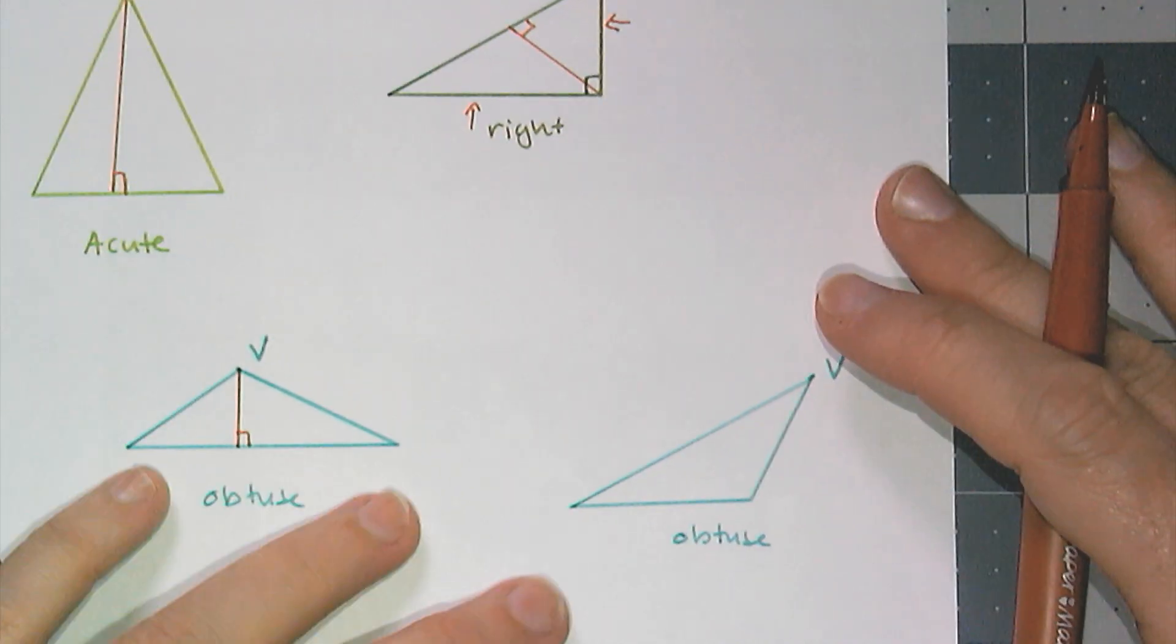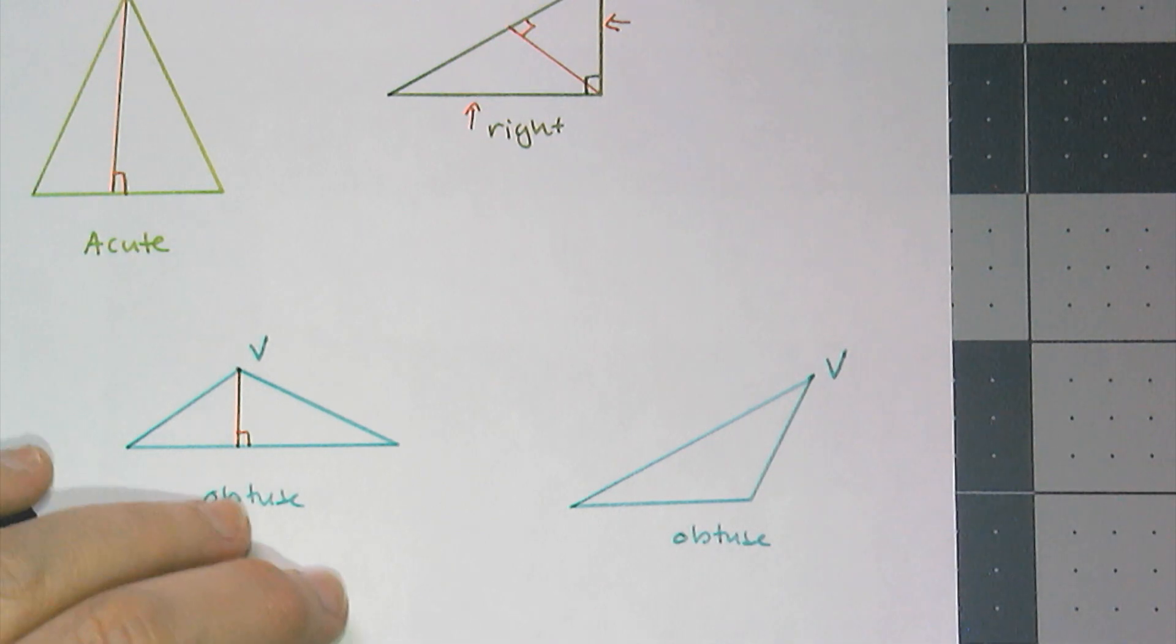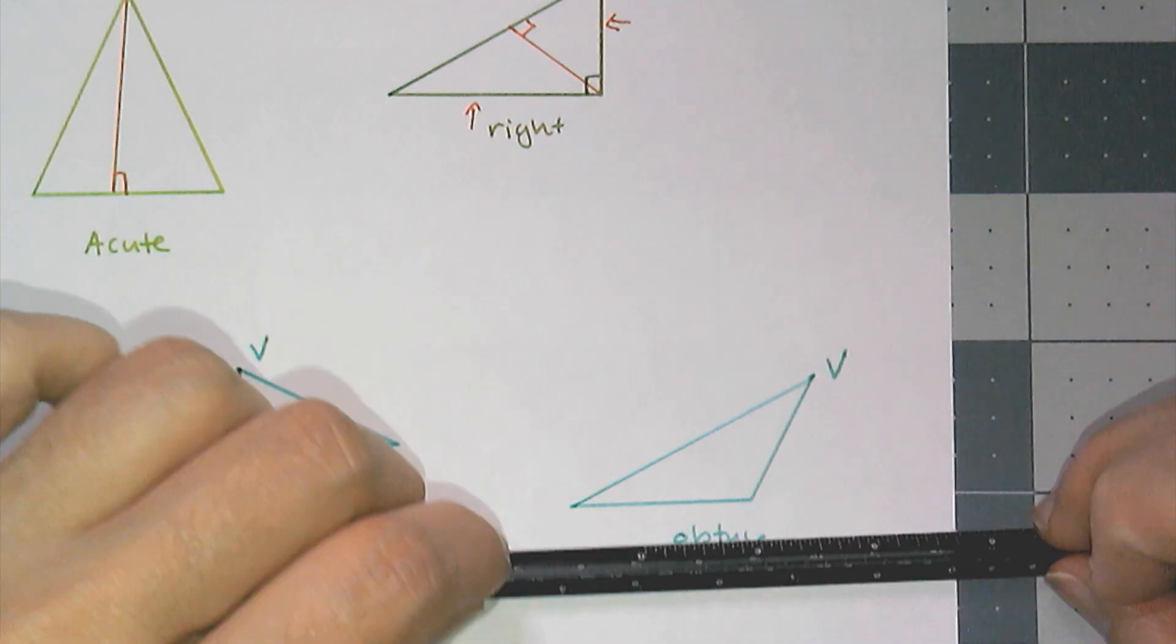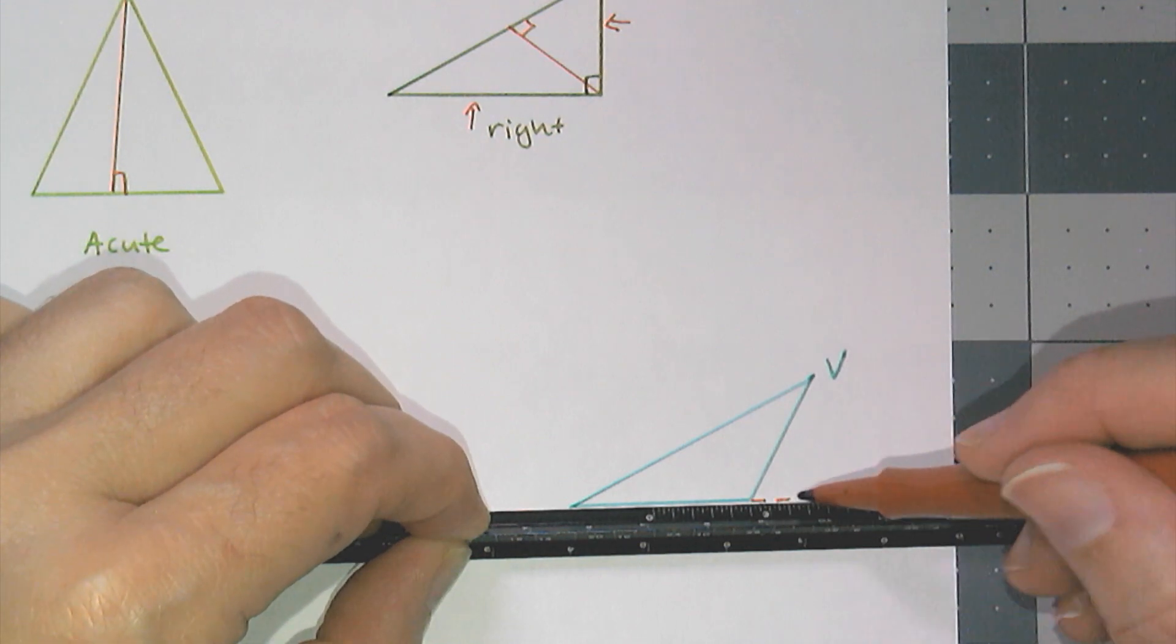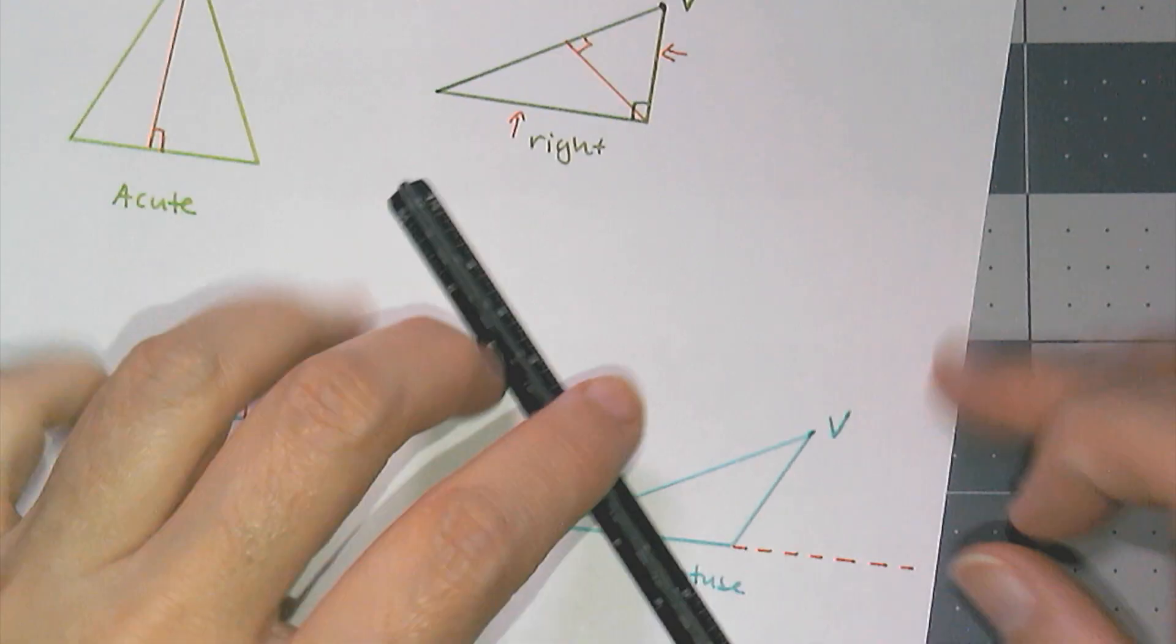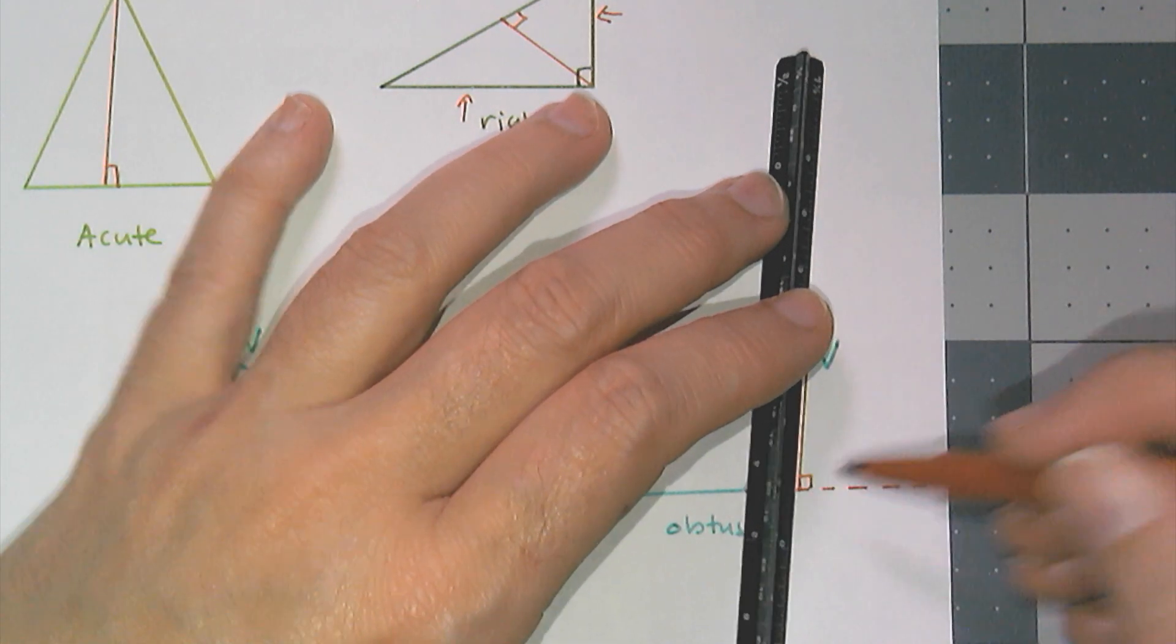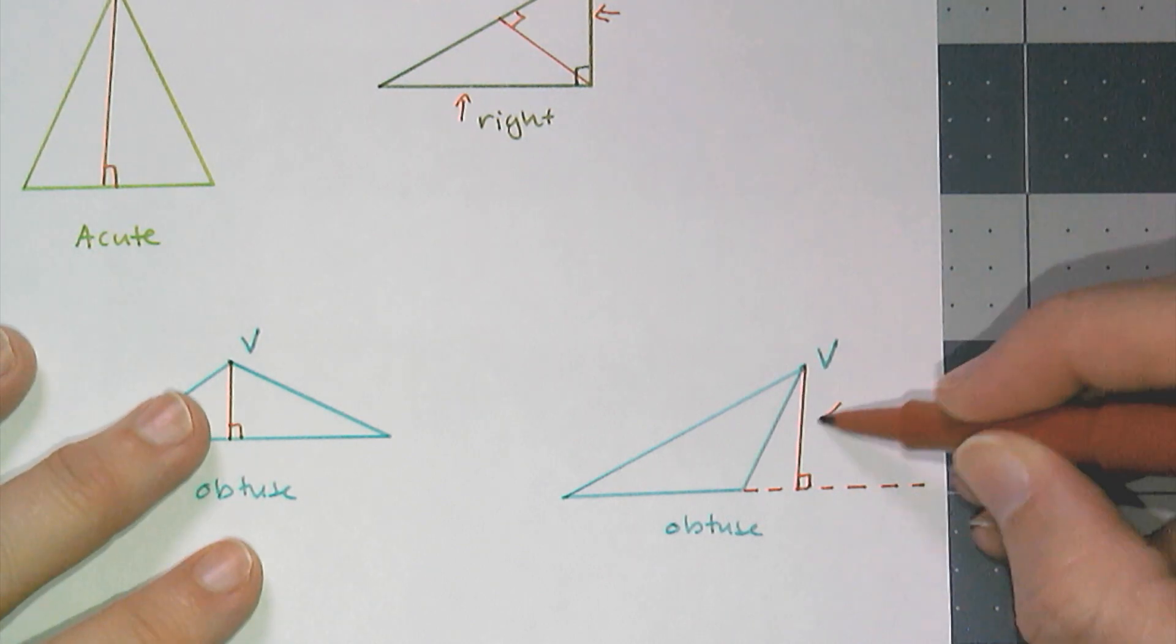But if I rotate this obtuse triangle and I use one of the acute angles as the vertex, I can't draw a perpendicular inside the obtuse triangle. And this is why that definition of altitude had that 'or' statement because I have to extend the side length out in order for me to draw or construct that perpendicular distance or altitude from vertex V. And so this is the altitude.